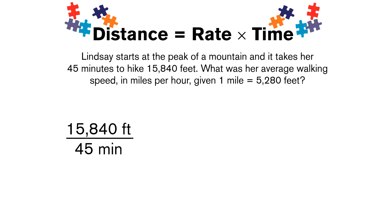Before doing any division, let's set up the full problem with all the conversion factors we need. To get from feet per minute, we'll first multiply by the conversion factor to hours. We know there are 60 minutes per one hour, so we put 60 minutes in the numerator and one hour in the denominator. This lets us cancel out the units of minutes, changing everything to feet per hour.